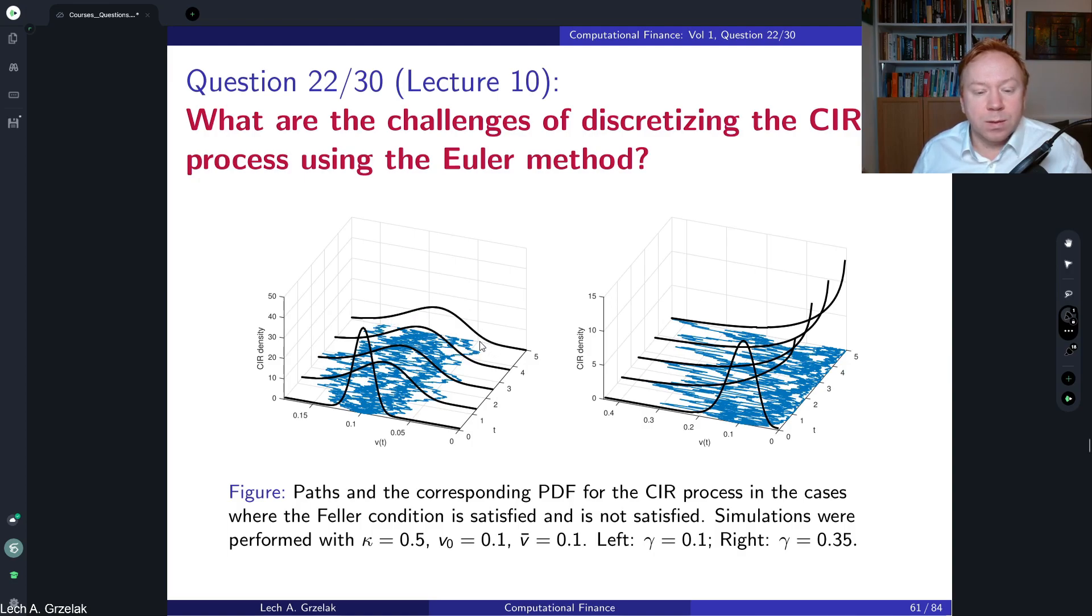And here you can see that for the satisfied Feller condition indeed there is some kind of it looks like a normal distribution. However, you can notice that on the right hand side the values are less fat tailed than here. So there is much more probability on the left hand side. The extreme events are more likely. The paths look like mean reverting indeed. Everything mean reverts around this long-term mean.